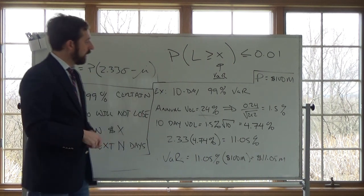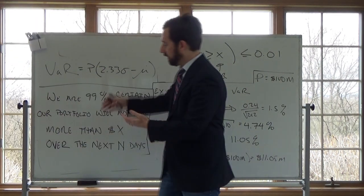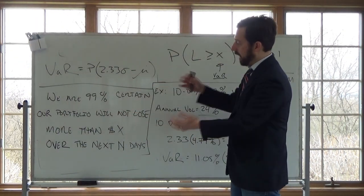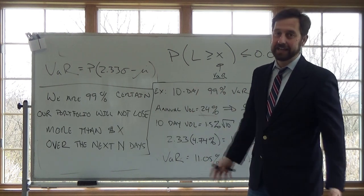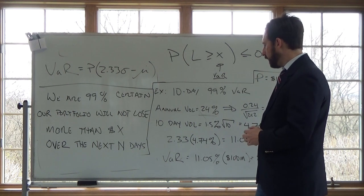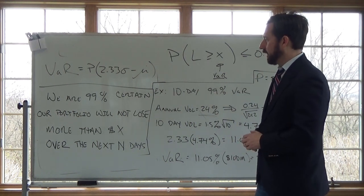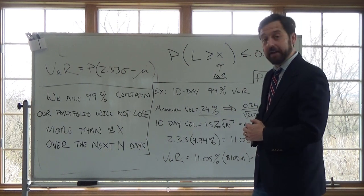So to sum up a simple calculation of value at risk. Again, always keep in the back of your head that this is the statement we want to make. We're 99% sure that our portfolio will not lose more than 11 million over the next 10 days. That's the statement, but you'll see it written like this, a brief example and why it's important. And that definitely is important. All right. Have a great day.